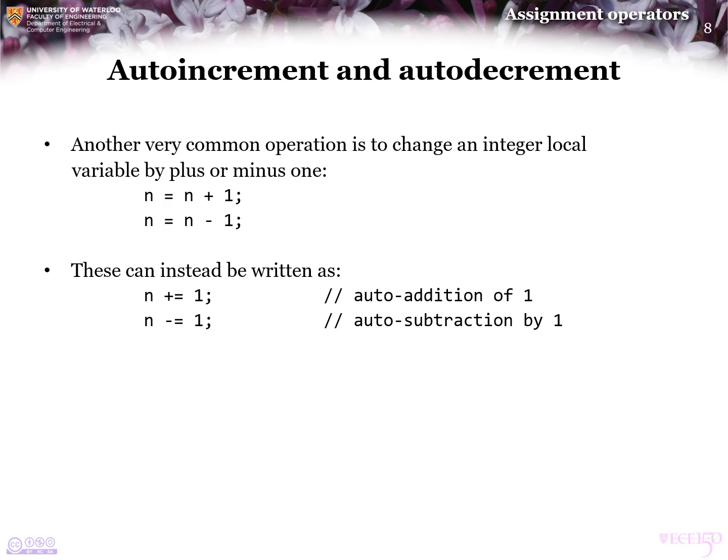With the previous operators, we could write both of these as n plus equals 1 or n minus equals 1, and this would be an automatic addition of 1 or an automatic subtraction by 1. However, C++ has an even shorter notation for these two very specific operations.